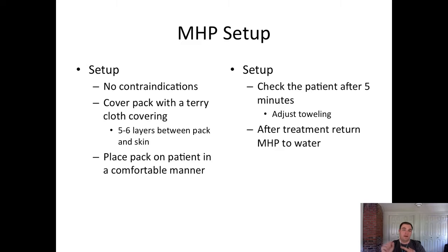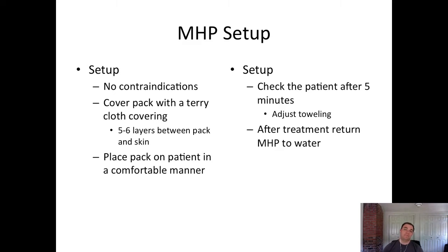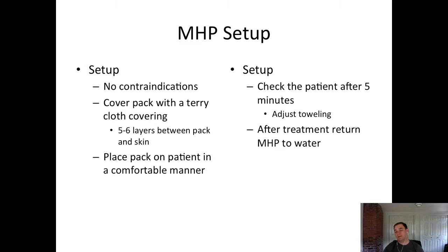For moist hot pack setup: confirm no contraindications, remove the pack from the hydroculator and place it in a terry cloth cover, then layer with five to six towel layers between the pack and skin on top of the terry cloth cover. Ensure the patient is in a comfortable position — prone patients may need a prone pillow. Check on the patient after a couple of minutes, then again at five minutes: ask if it's too warm, if they're doing okay. Patients often nap during the 15–20 minutes of treatment.